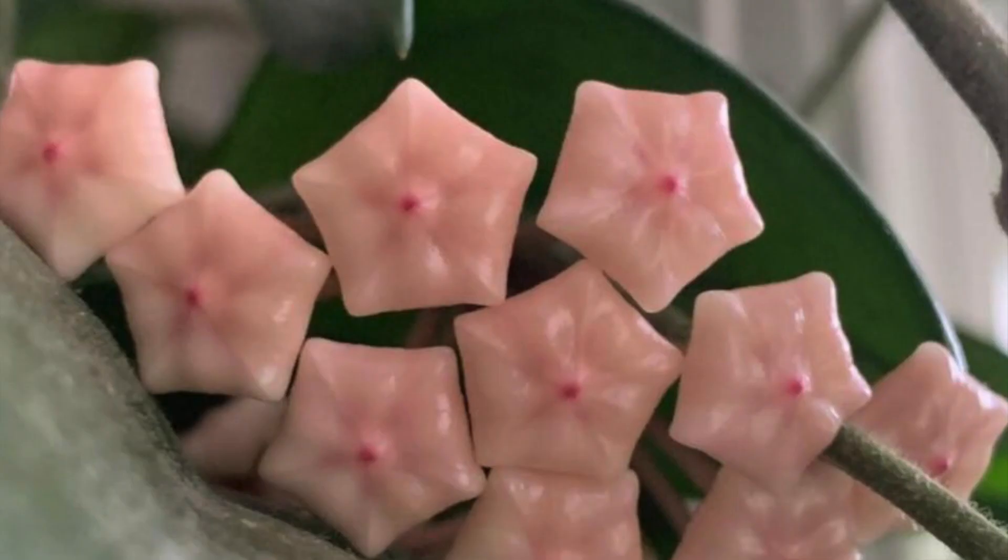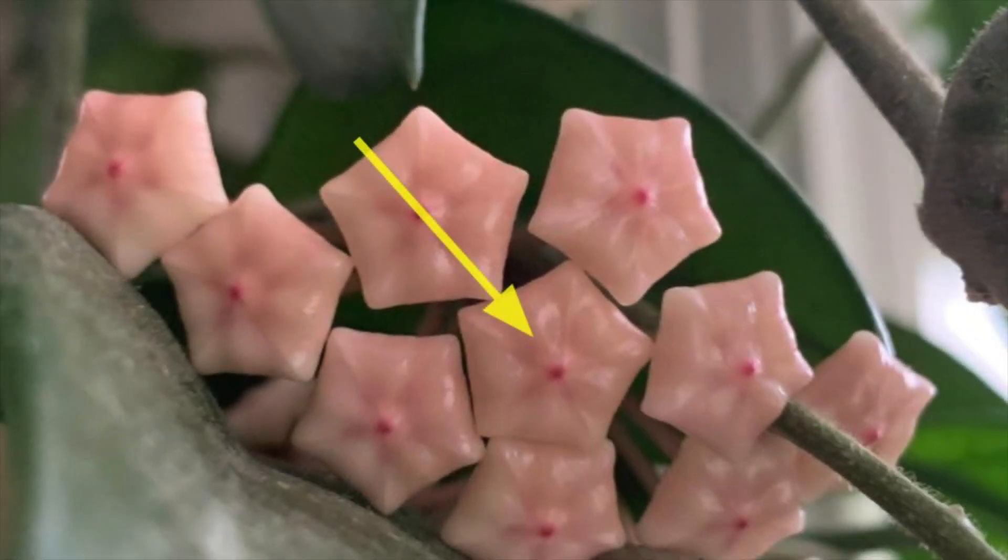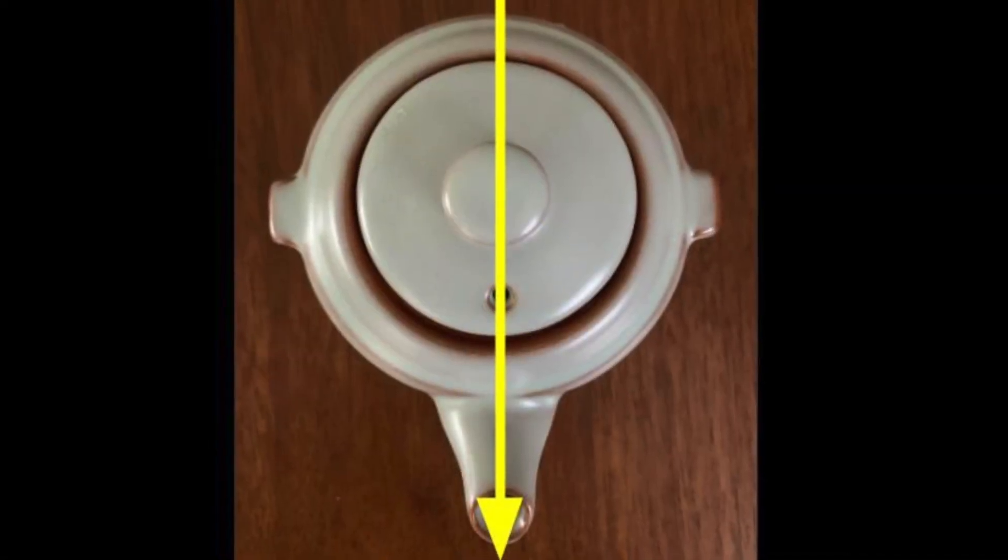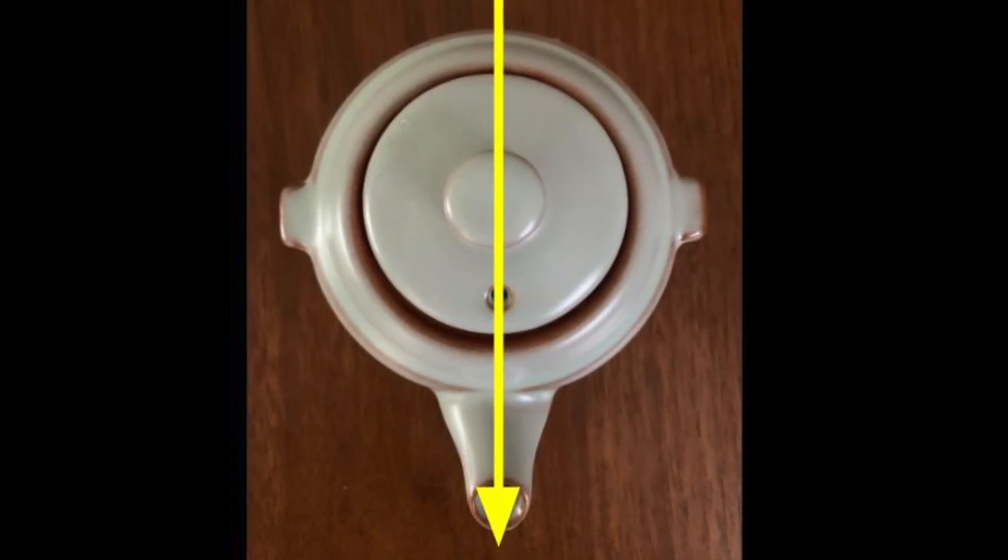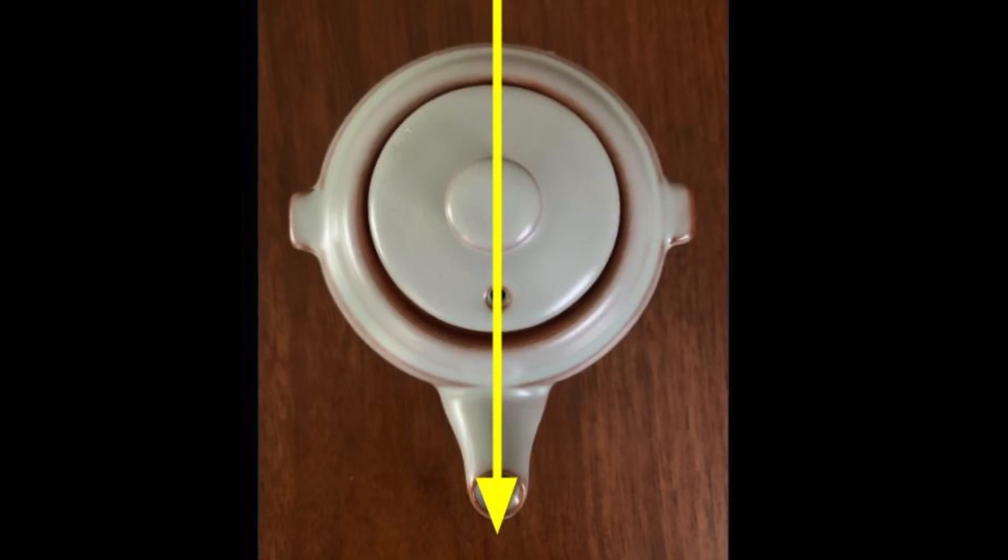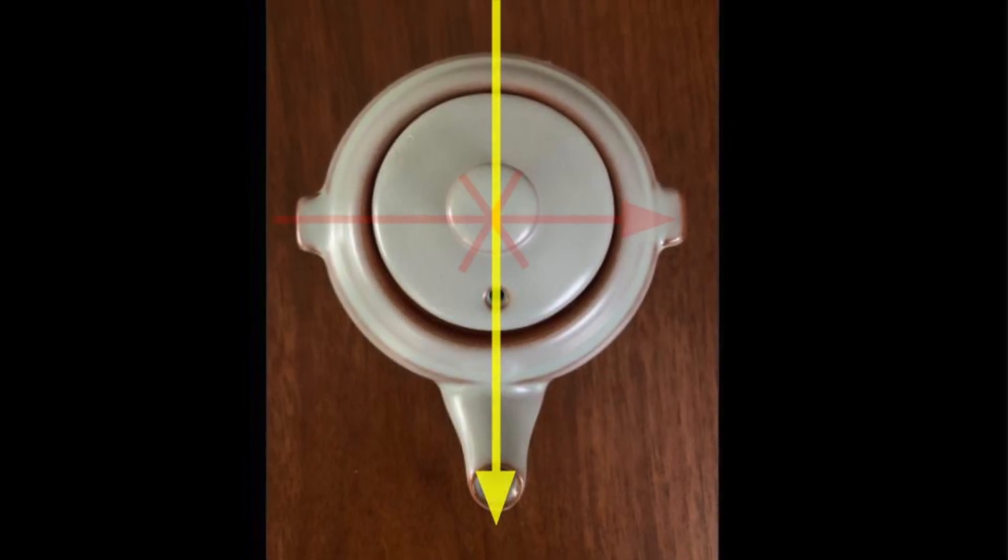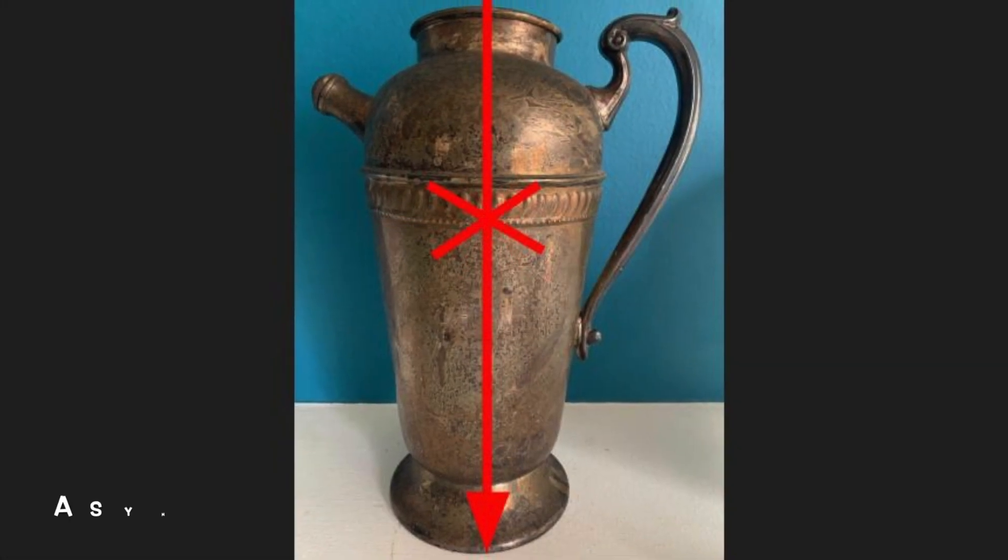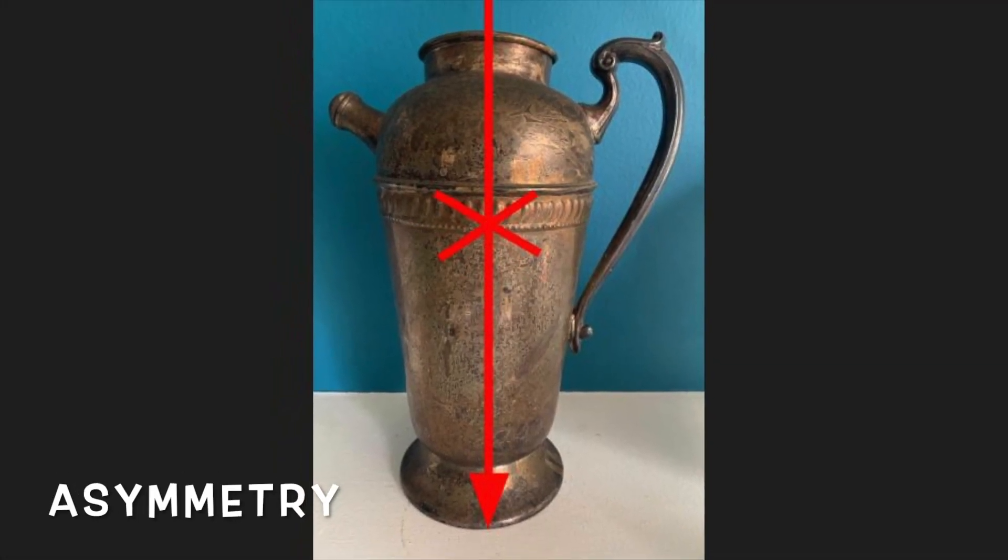Lines of symmetry can also occur on a diagonal. One object may have many different lines of symmetry. We observe symmetry in nature and we also observe symmetry in man-made objects like this teapot. Sometimes objects are symmetrical in one direction but not symmetrical in a different direction. When an object is not symmetrical when divided down the center, we call that asymmetry.